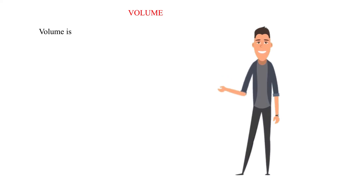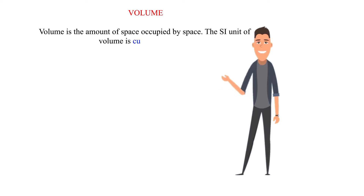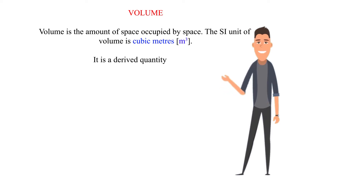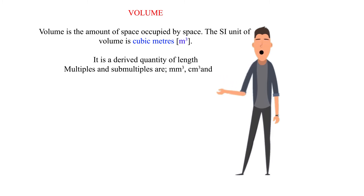Volume is the amount of space occupied by space. The SI unit of volume is cubic meters. It is a derived quantity of length. Multiples and submultiples are cubic millimeters, cubic centimeters, and cubic kilometers.